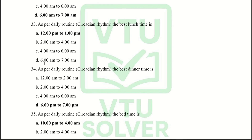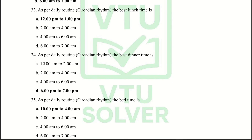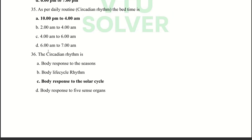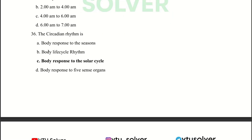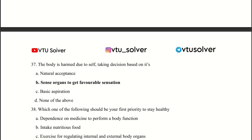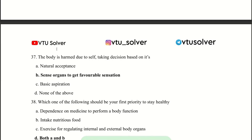As per daily routine, the best time for lunch is 12pm to 1pm. Next question: The best dinner time is 6pm to 7pm. The bed time is 10pm.